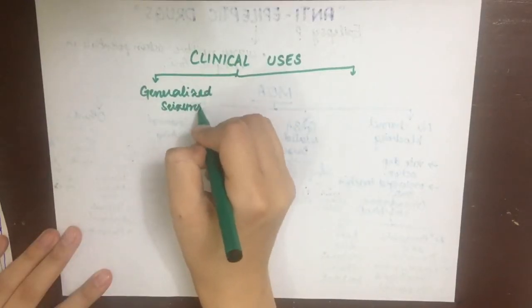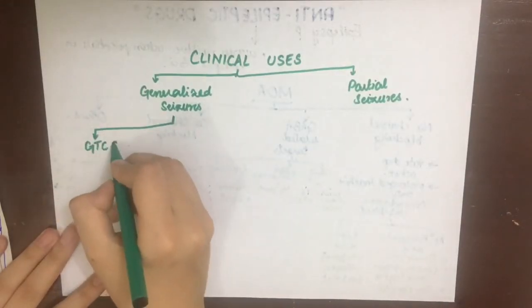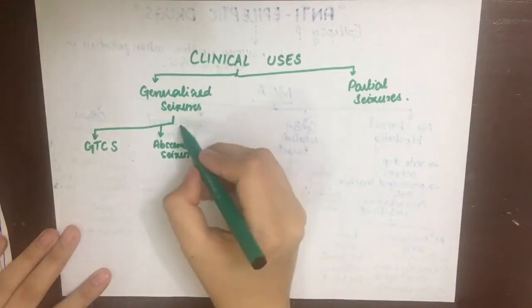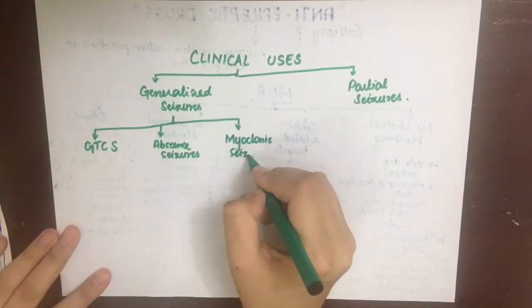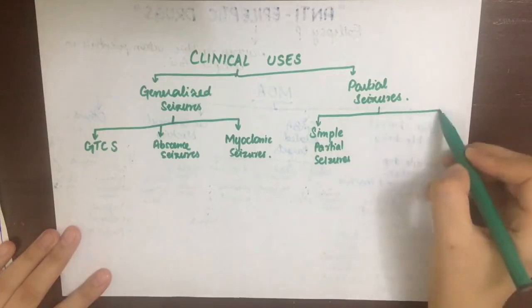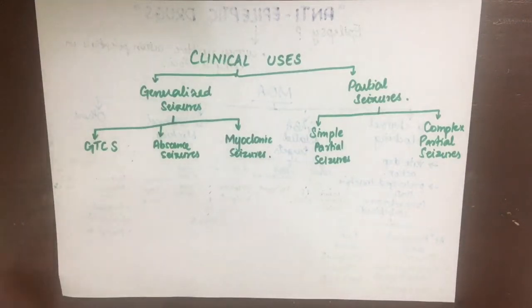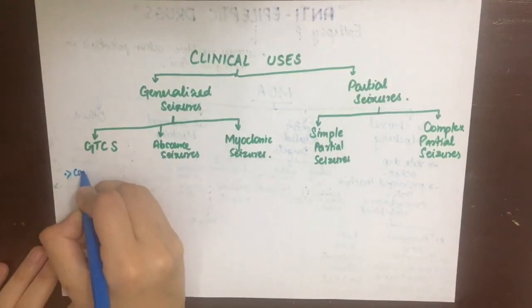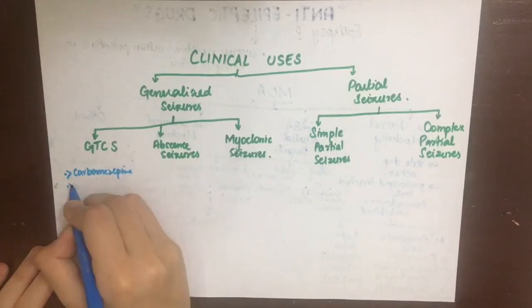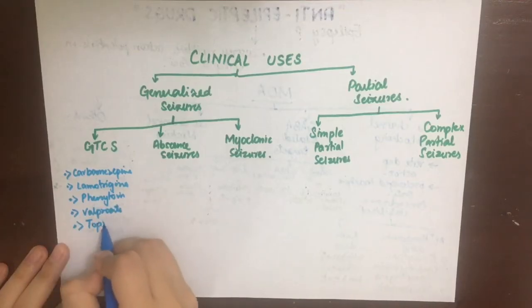Seizures can be divided into generalized and partial seizures. Generalized seizures are further divided into generalized tonic-clonic seizures (GTCS), absence seizures, and myoclonic seizures. Partial seizures can be divided into simple partial and complex partial seizures. In GTCS, the electrical discharge instantaneously involves the whole brain on both sides with loss of consciousness. The drugs used in GTCS are carbamazepine, lamotrigine, phenytoin, valproic acid, topiramate, and gabapentin.